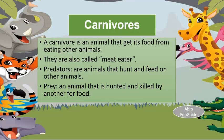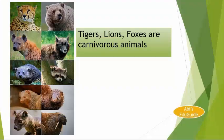Carnivores. Carnivores is an animal that gets food from eating other animals. They are also called meat eaters. Predators are animals that hunt and feed on other animals. Prey is an animal that is hunted and killed by another for food. Tigers, lions, and foxes are examples of carnivorous animals.